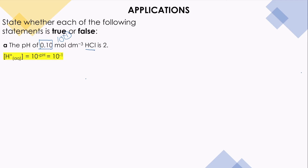We need to know the formula: the concentration of hydrogen ions equals 10 to the power negative pH. What we have here is 10 to the power negative 1, so the pH should be 1. For a multiple choice question in paper 1, you must know that 0.1 is 10 to the power negative 1, and that 10 to the power negative pH equals the concentration of hydrogen.